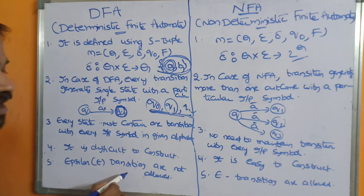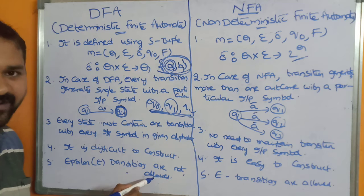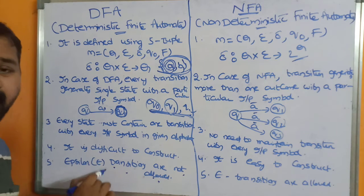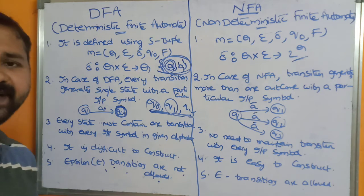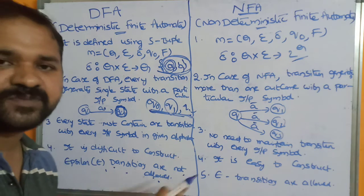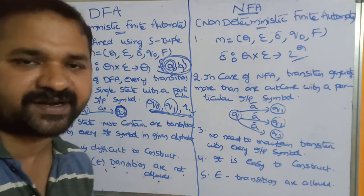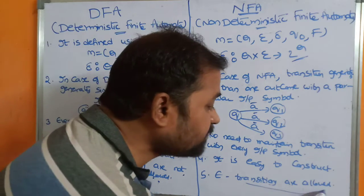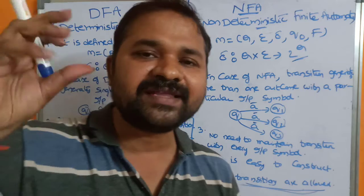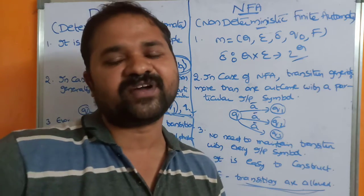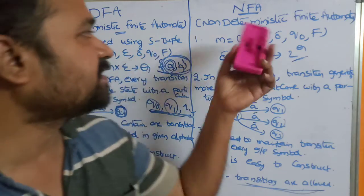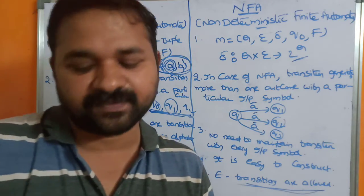The fifth and last difference: epsilon transitions are not allowed in DFA. Epsilon means there is no symbol — moving from one state to another without any input. Such epsilon transitions are not possible in DFA. Whereas in NFA, epsilon transitions are allowed, meaning we can move from one state to another state without applying any input. These are the five differences between DFA and NFA.